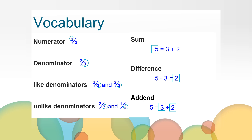The sum is an answer to an addition problem. The difference is an answer to a subtraction problem. An addend is one of the numbers that we add together in an addition problem.